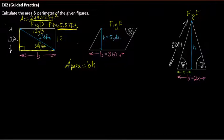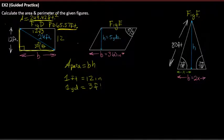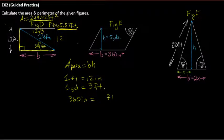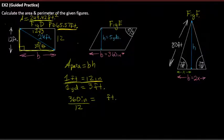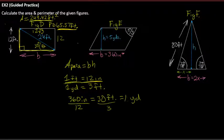Recall: one foot is 12 inches and one yard is 3 feet. So 360 inches divided by 12 gives 30 feet, and 30 feet divided by 3 gives 10 yards. So our base is 10 yards.